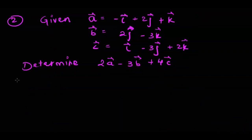Let's do another question for the sake of practice. If you're given vector a which is minus i plus 2j plus k, this is Cartesian form of vector in 3 space. We are given vector b equal to 2j minus 3k. Here i is missing means i is 0. c is equal to i minus 3j plus 2k. We have to determine 2a minus 3b plus 4c.